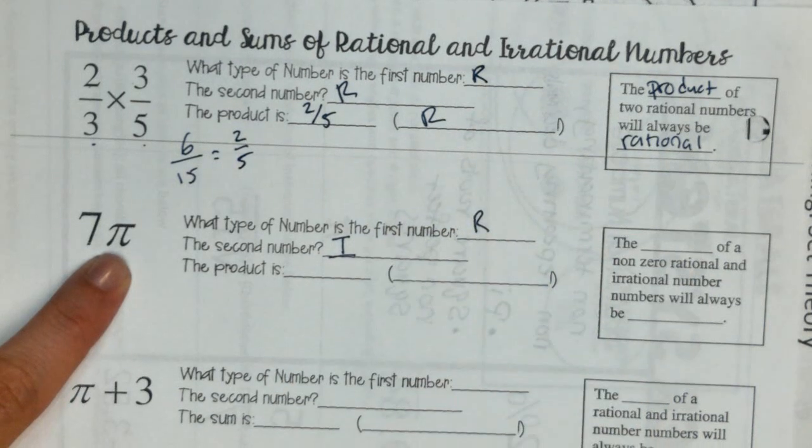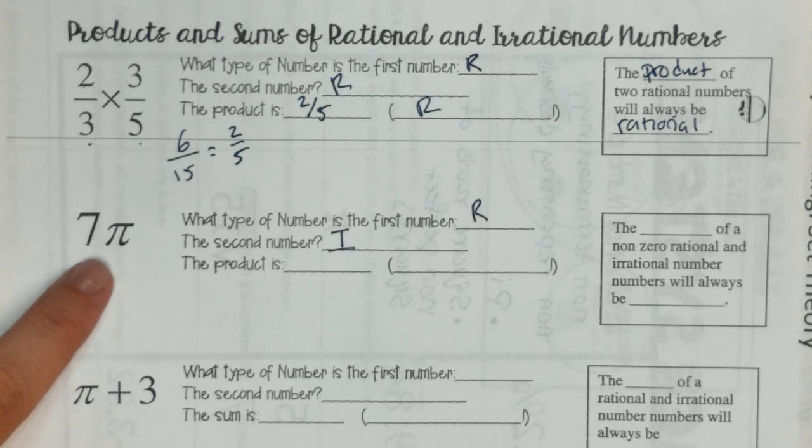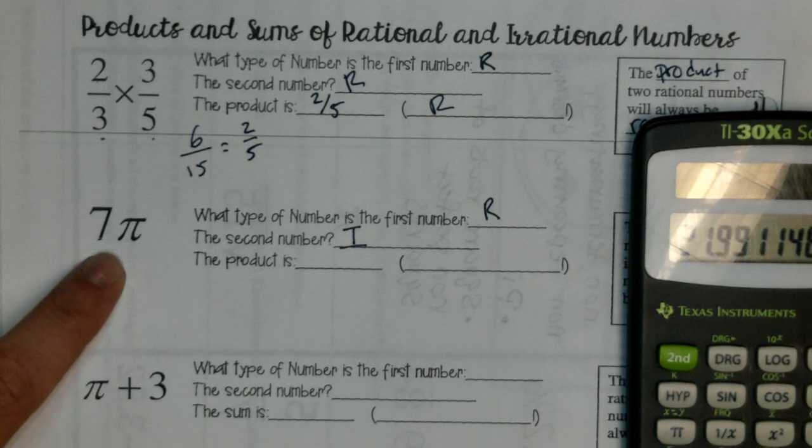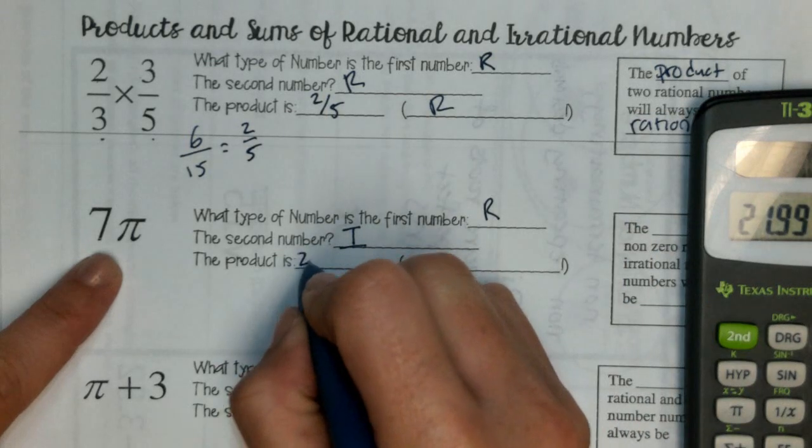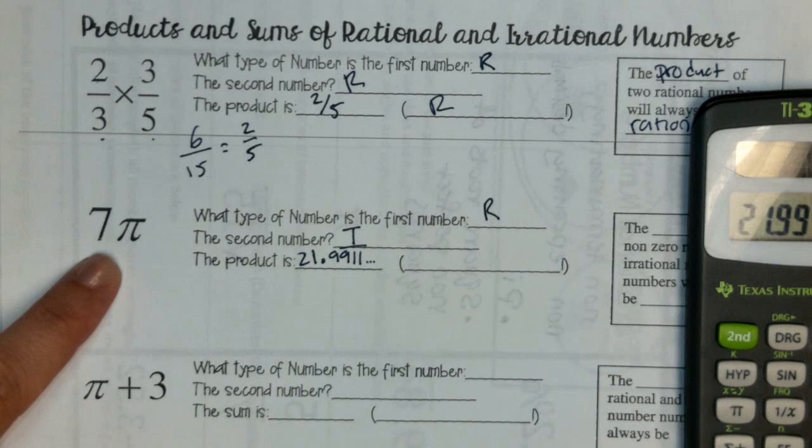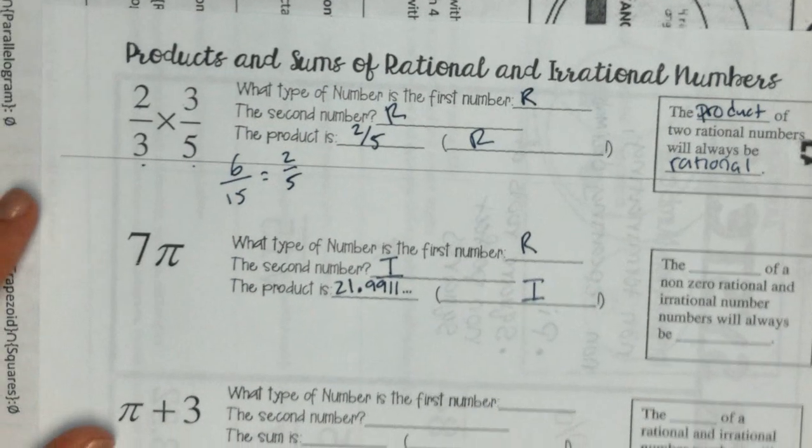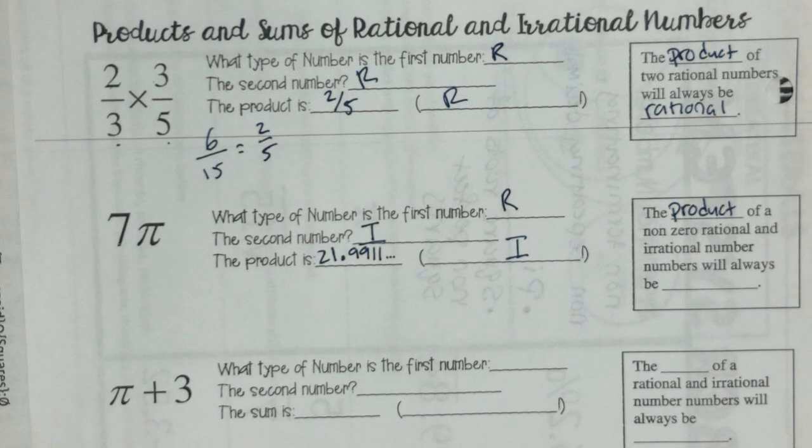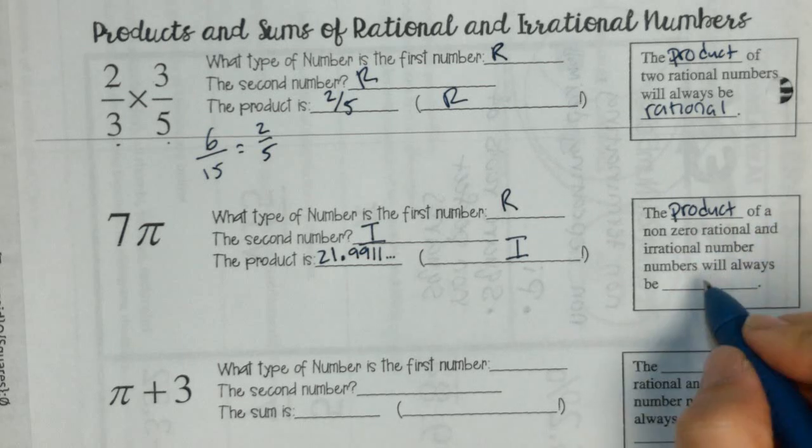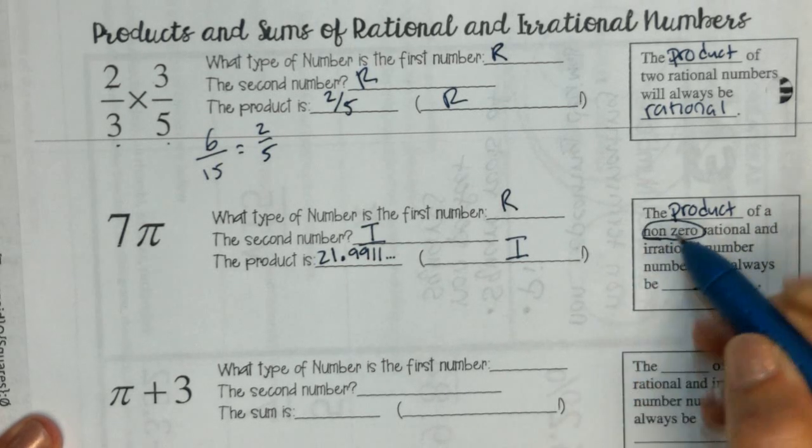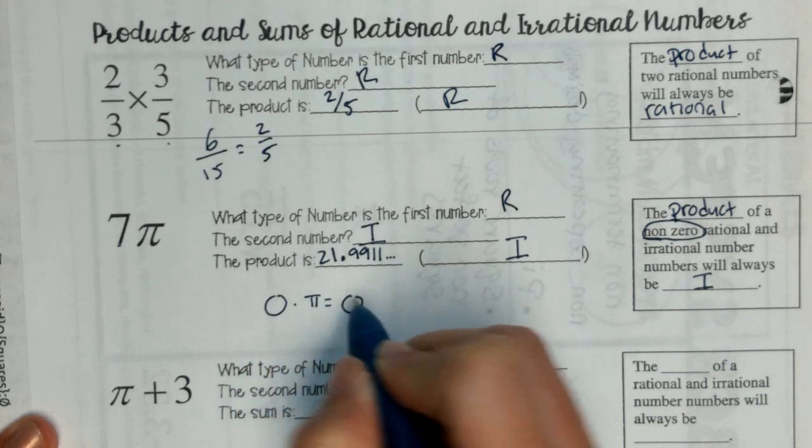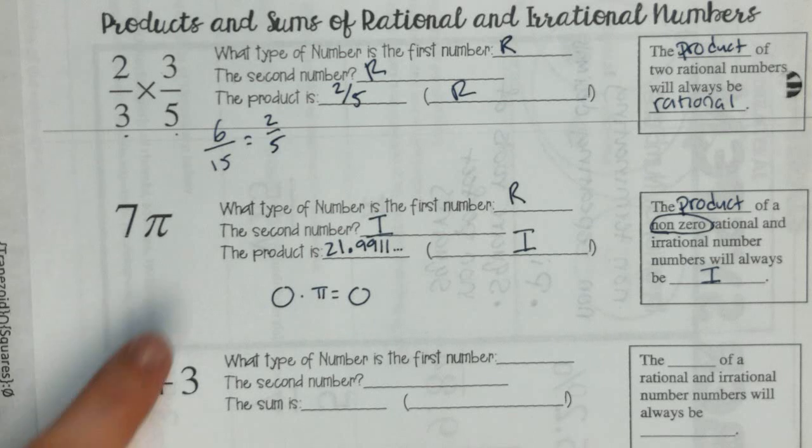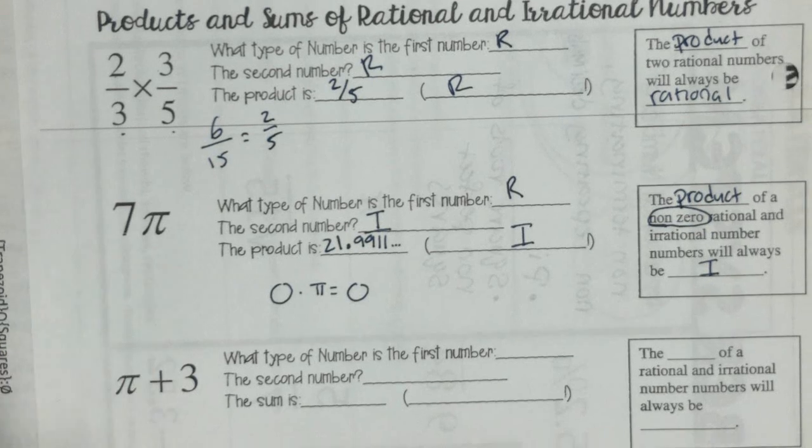Pi is an irrational number, so we're going to use I for irrational. When we multiply these together in our calculator, we get 21.9911485. This is an irrational product. So, the product, which means when we multiply something together of a non-zero rational and irrational number, it will always be irrational. We have to put this non-zero part in because 0 times pi is 0, which is rational. So, it has to be non-zero. But since part of our answer is irrational, our whole answer will end up being irrational.